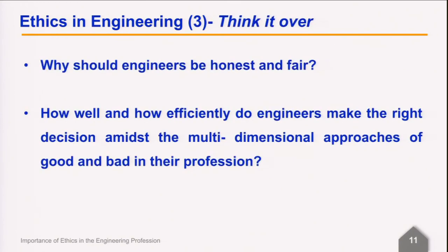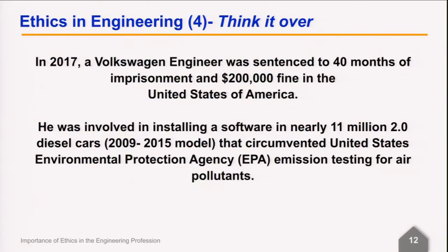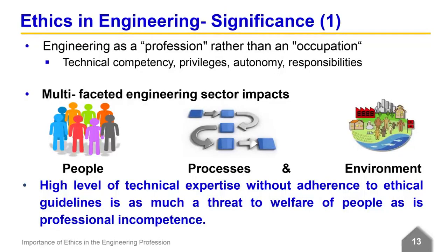Before we look at ethics in the engineering profession, let us consider some questions. Why should engineers be honest and fair? How well and how efficiently do engineers make the right decisions amidst the multi-dimensional approaches of good and bad in their profession? If you recall in Lecture 1, we looked at cases of how set norms were neglected by an engineer in a large multinational car company. We saw cases of flyover collapses, data breaches — and as a result, in some cases public safety was put at risk, the environment was affected, and personal identities of people were at risk.